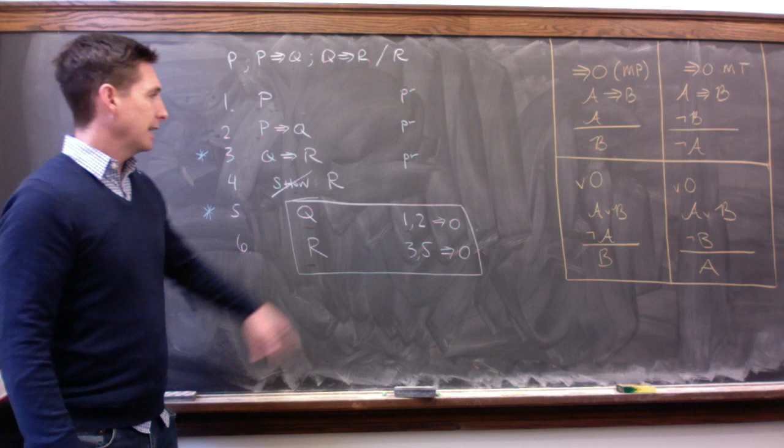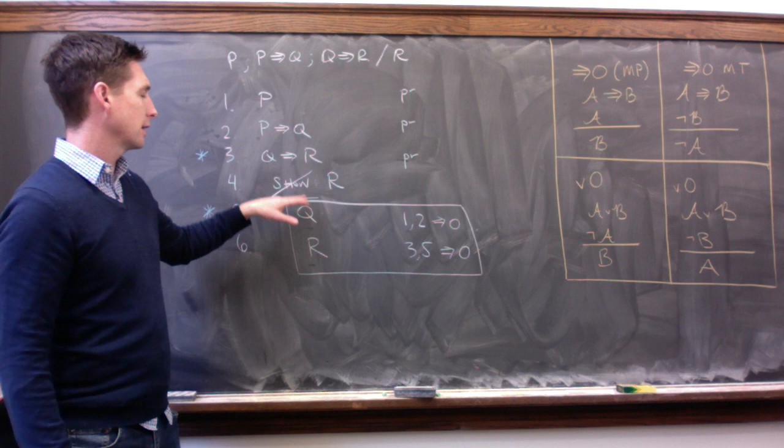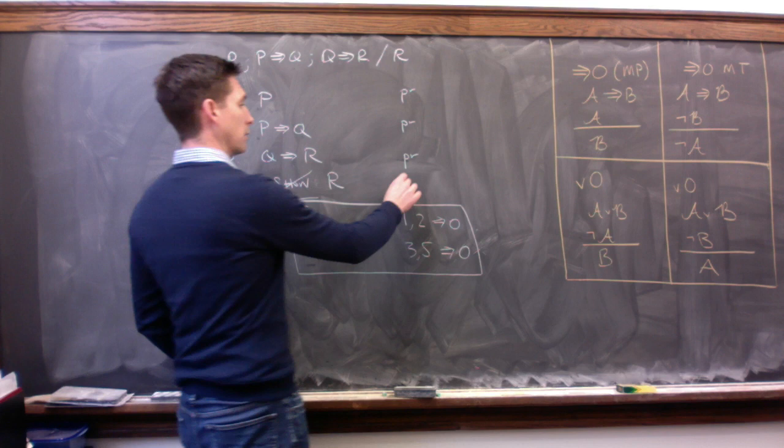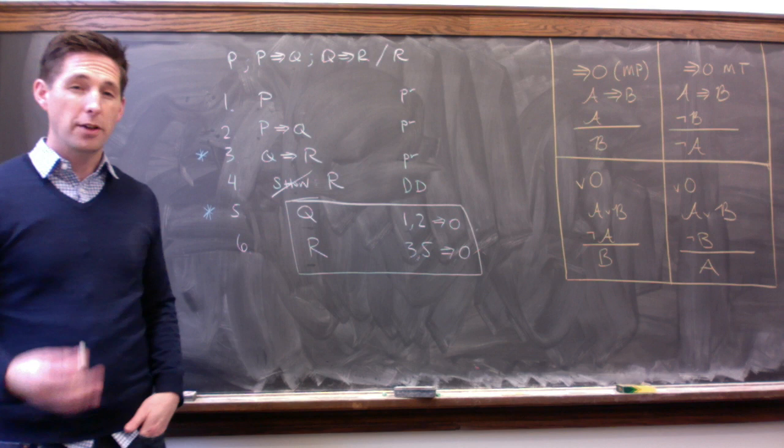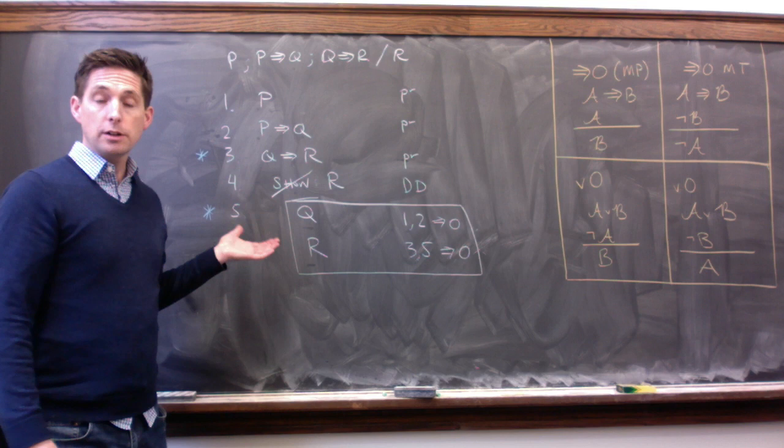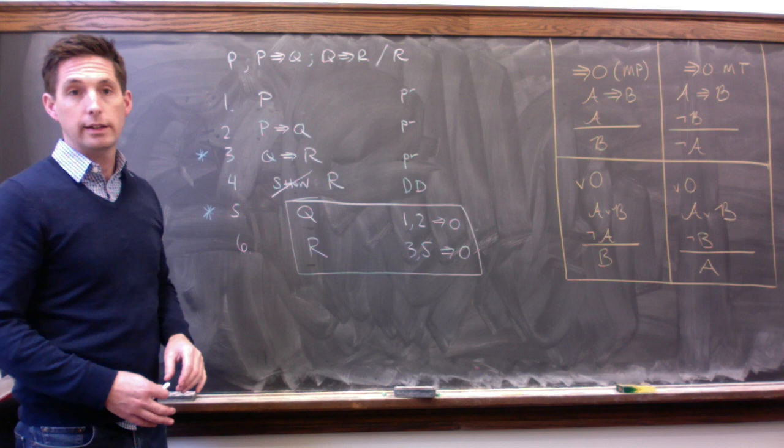And finally, we have to say why we're allowed to cancel that show line. What gave us the right to cancel that show line? In this case, we directly derived R. We set out to show R, and R is there at the bottom of our proof. We call that a direct derivation. And so we're going to write DD here for direct derivation. Again, we'll see some other derivation techniques as we go forward. So for now, this isn't going to make a lot of sense either, but just kind of get in the habit now and we'll see why we need to do so in the future. Alright, so that's our first derivation. This derivation shows us that the argument up here is valid.